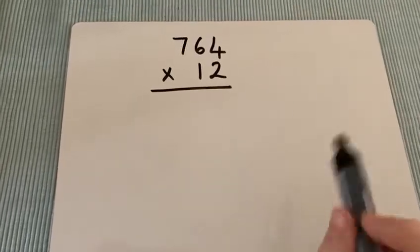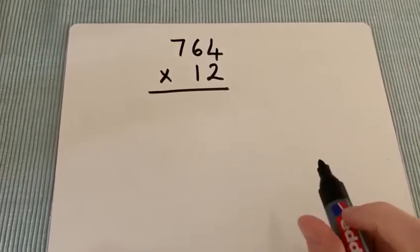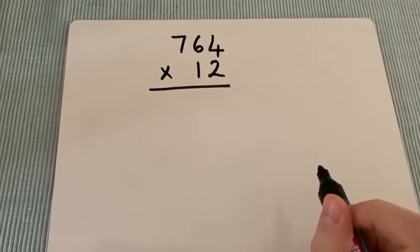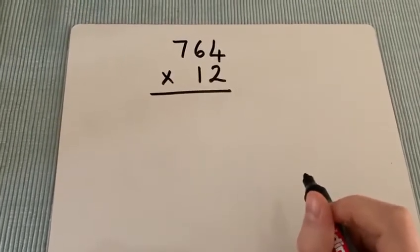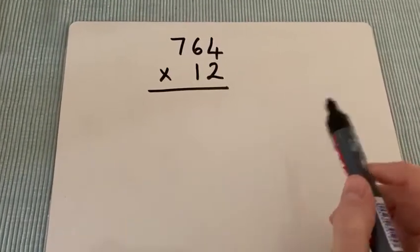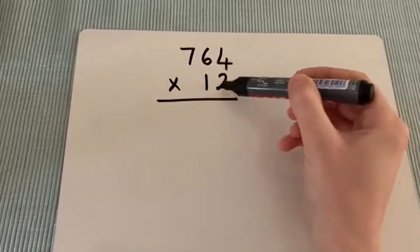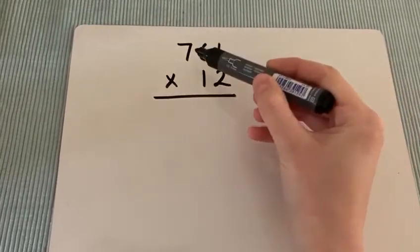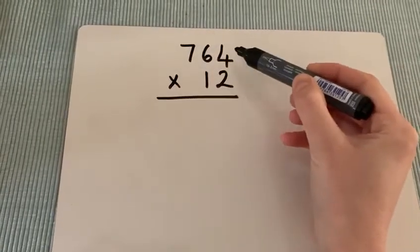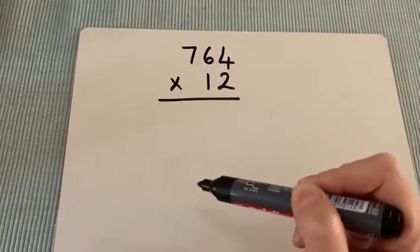For this long multiplication question, we're looking at timesing 764 by 12. So the first thing that we are going to do is look at the units. So we are going to times 764 by 2 to start with.